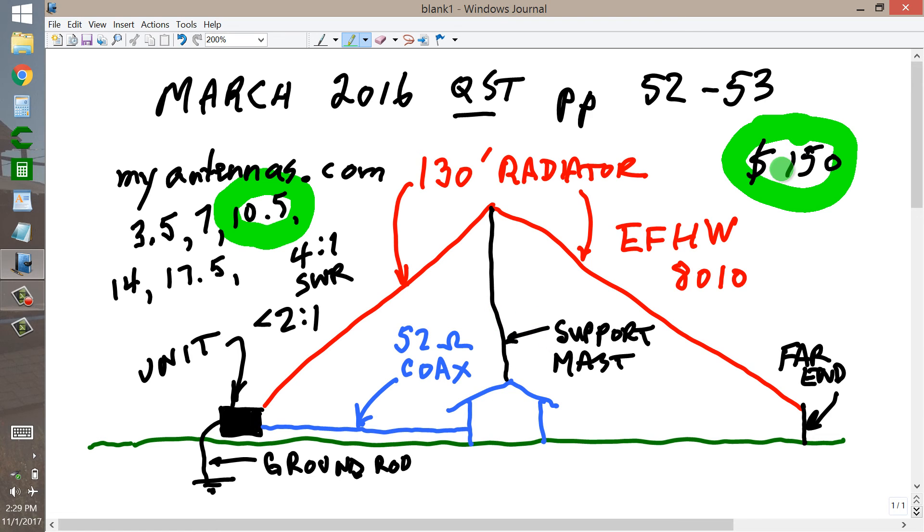So, that's the dope on this little thing called the EFHW End Fed half wave 80-10. And there are others, there's the 40-10, which is half as long, 65 feet. But this little box is the key.